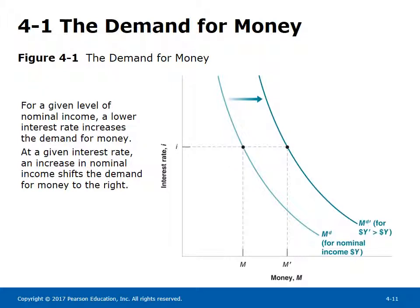Figure 4.1 depicts the demand for money function. The money demand curve is downward sloping. For a given level of nominal income, a lower interest rate increases the demand for money. At a given interest rate, an increase in nominal income shifts the demand for money to the right. Money demand increases proportionally — a 50% increase in nominal income increases money demand by 50%.